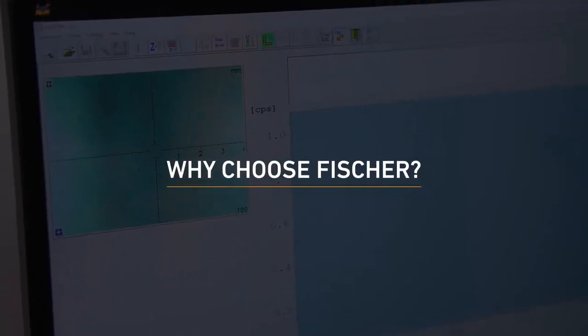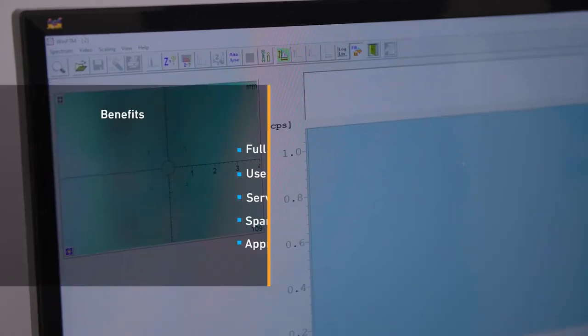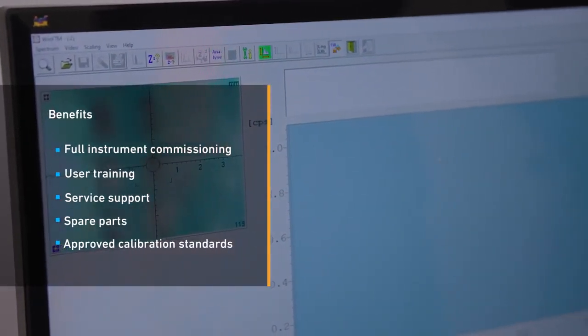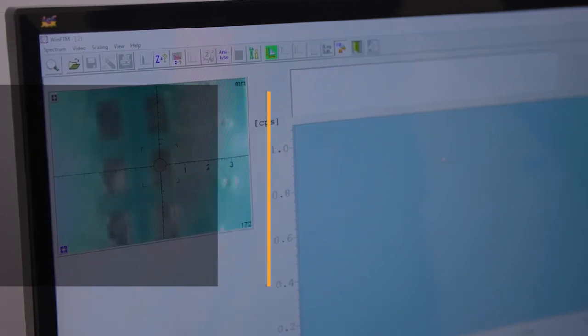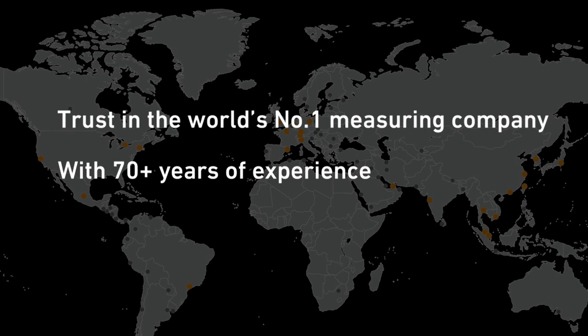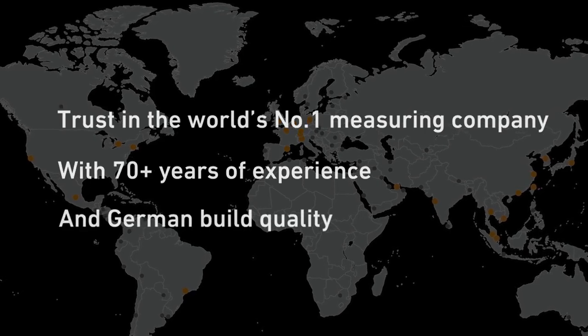Why choose Fischer? Fischer customers benefit from full instrument commissioning, user training, service support, spare parts and approved calibration standards. Trust in the world's number one measuring company, with 70 plus years of experience and German build quality.